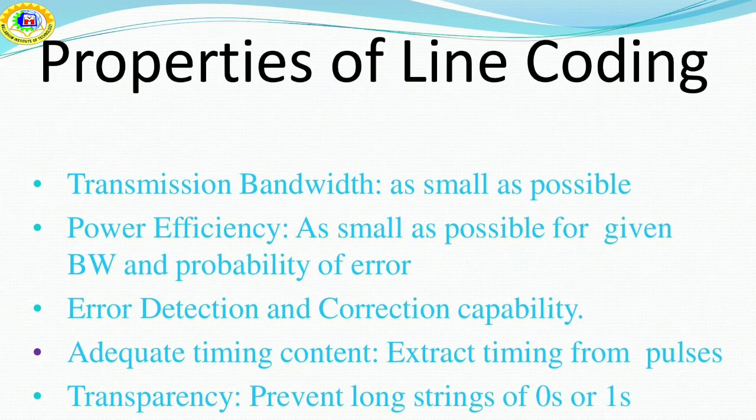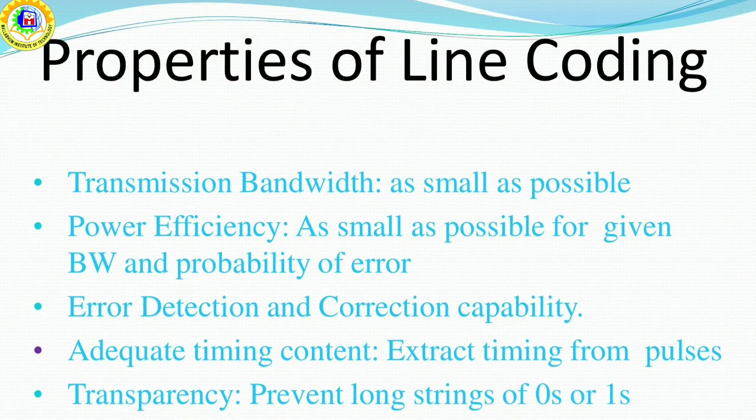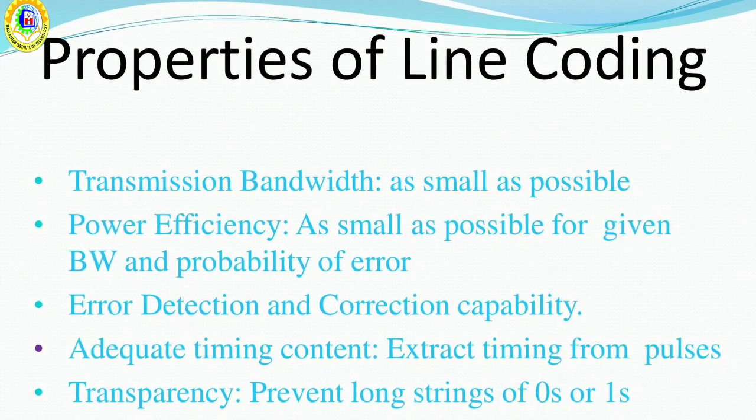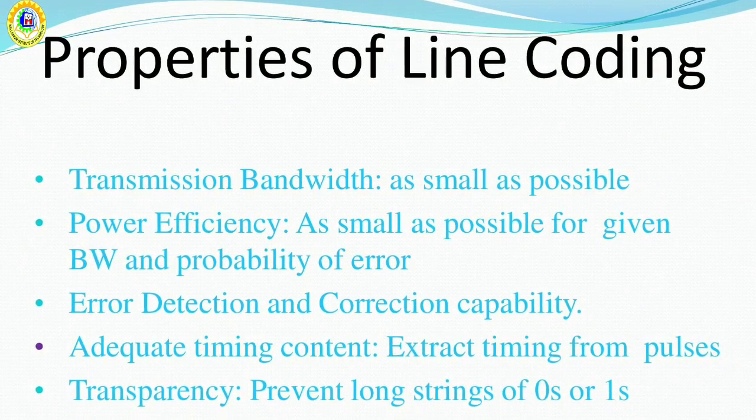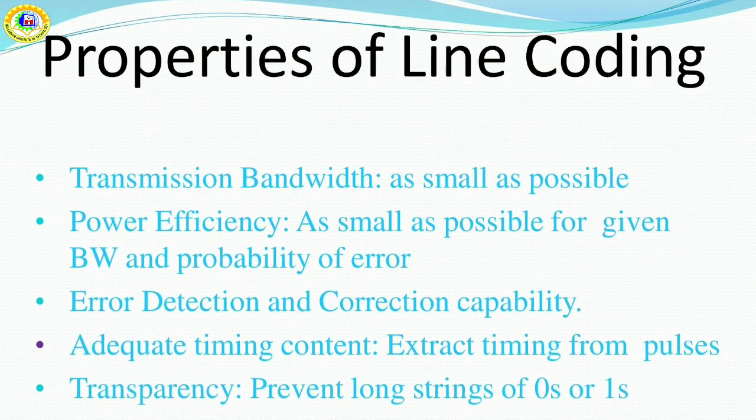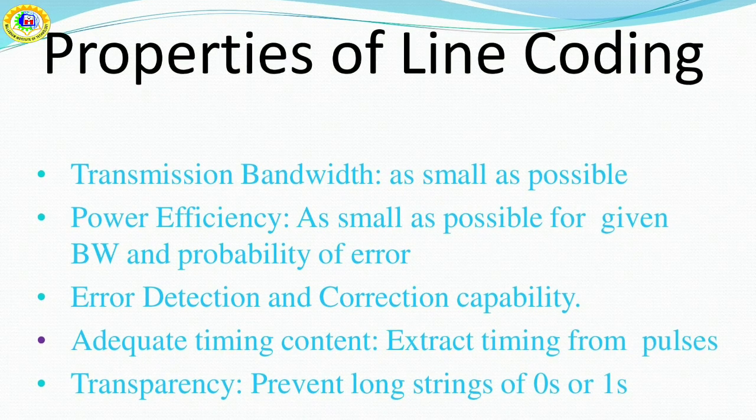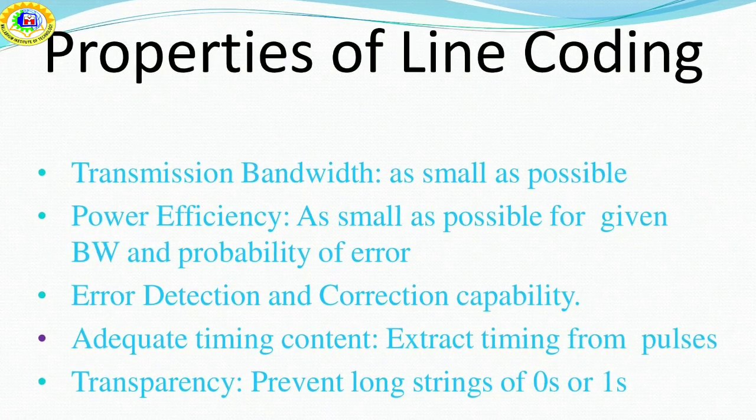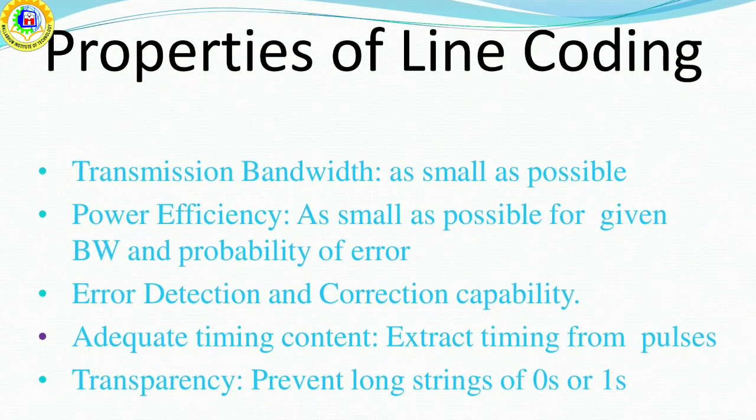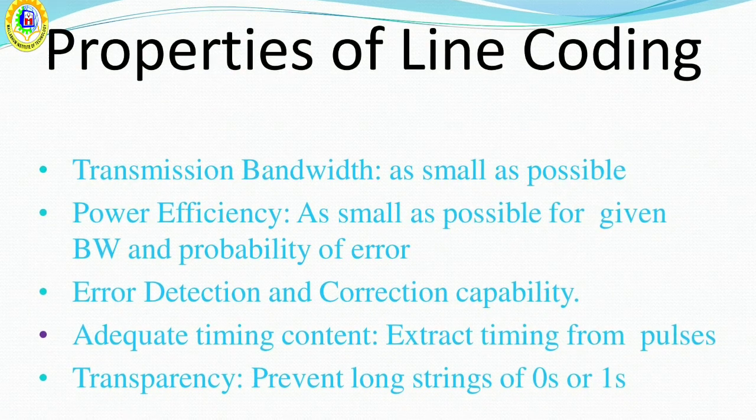Properties of line coding. Transmission bandwidth: The transmission bandwidth must be as small as possible. Power efficiency: For a given bandwidth and specified detection error probability, the transmitted power for a line code should be as small as possible.